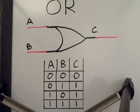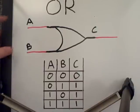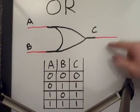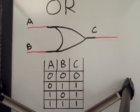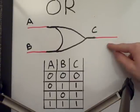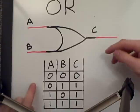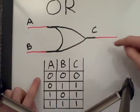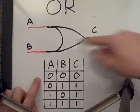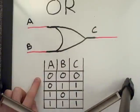This is an OR gate. Just like the AND gate, it also has two inputs, A and B, and one output, C. What's different about this one is that only one of the inputs has to be a one in order for C to be a one. The only outcome where C is zero is when both inputs are zero.